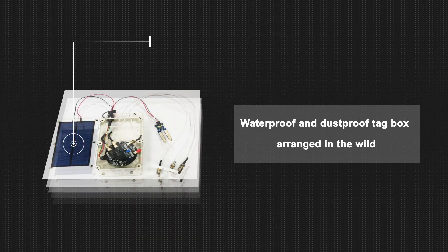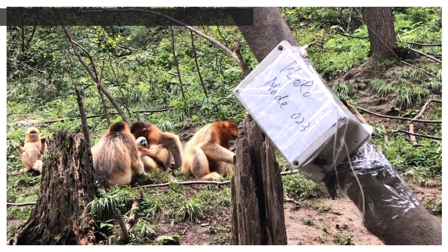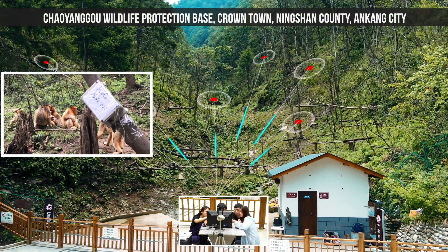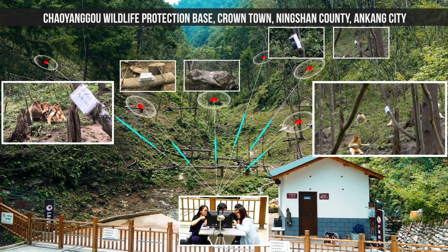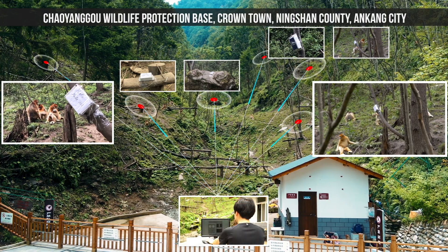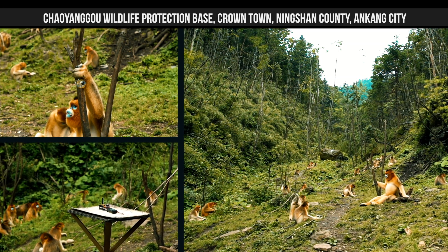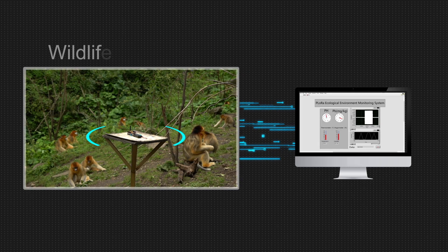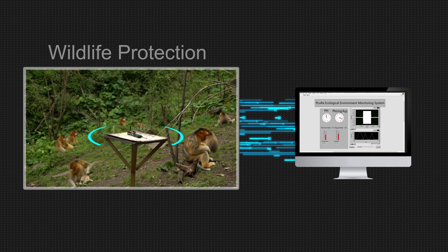We conduct two field studies with the P-LORA system. The first study deploys P-LORA tags in the Chinling Golden Monkey Nature Reserve to monitor the environment for wildlife protection, collecting temperature, humidity, and light intensity data. This allows biologists to track environment changes and predict the spatial distribution of golden monkeys.